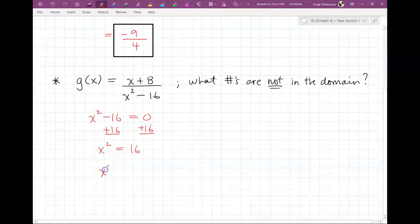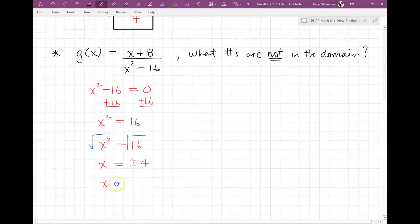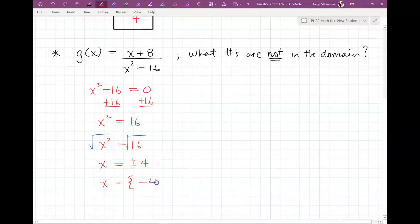Now I'm going to take the square root of both sides. So the square root here, the square root here. The square root of x squared is just x. The square root of 16 is plus or minus 4. That means you have two answers. Your two answers are -4 and +4.